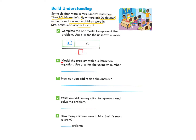Now we move on to part B: model the problem with a subtraction equation. Use a square for the unknown number. We have the unknown number, and we are going to take away, using a subtraction equation, the number 10 because 10 kids left. We were told in the word problem that there were 20 children in the room after 10 left, so this 20 goes right here.